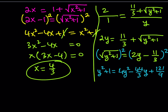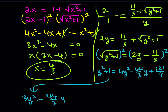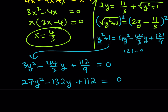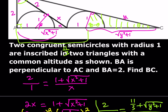Multiplying everything by 9 to clear fractions: 27y² − 132y + 112 = 0. Now we solve for y. After solving for y, we still need to find the remaining length, but once we have y we know AC and can use the similarity rule. Let's use the quadratic formula: y = (−b ± √(b² − 4ac)) / (2a), where a = 27, b = −132, c = 112, so the denominator is 54.